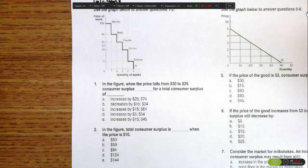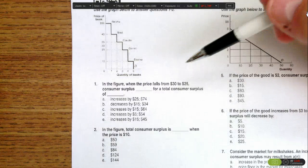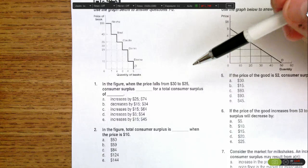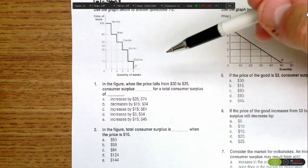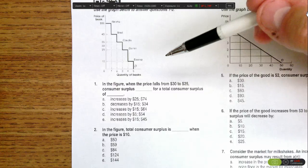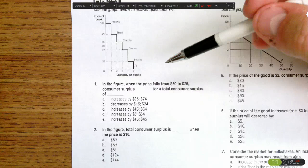Okay, this question is asking what happens to consumer surplus when we see a price decrease from $30 to $25. To answer that, we need to identify what consumer surplus was at the $30 price and then compare it to what it is at $25.